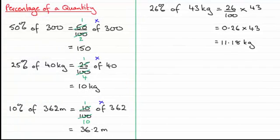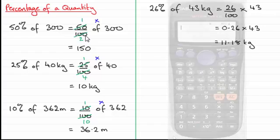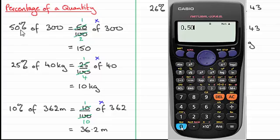Now this method works equally well, even on these easier ones. When it comes to 50% of 300, just type into your calculator 0.50 times 300. You don't even have to type in 0.50, you can just type in 0.5 times 300, and you'll find you get 150. And for this one, if we do 0.25 times 40, you get 10 kilograms. And for 10% of 362, enter 0.10 times 362, or even 0.1 times 362. It will still give you 36.2.